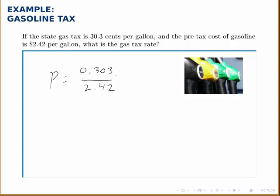We get this by essentially writing an equation that 30.3 is what percentage of 242 and then solving for the P, for the percentage.